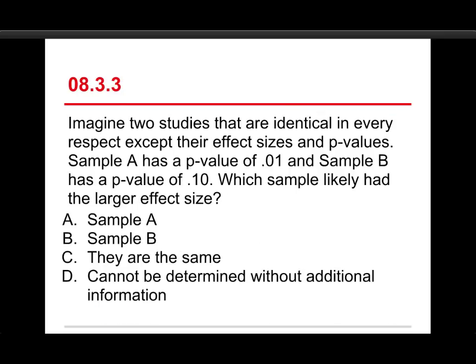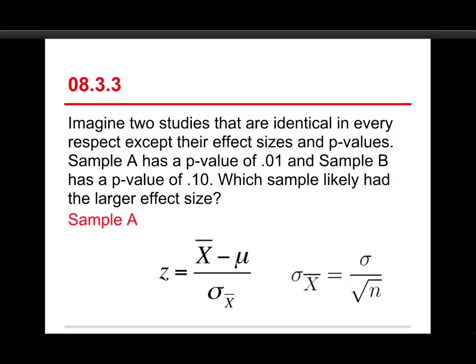And now for the third question. Imagine two studies that are identical in every respect except their effect sizes and p-values. Sample A has a p-value of 0.01 and sample B has a p-value of 0.10. Which sample likely had the larger effect size? The choices are A, B, they're the same, or can't be determined without additional information. Well, in this case the answer is A, and it helps to look at the z-score formula.